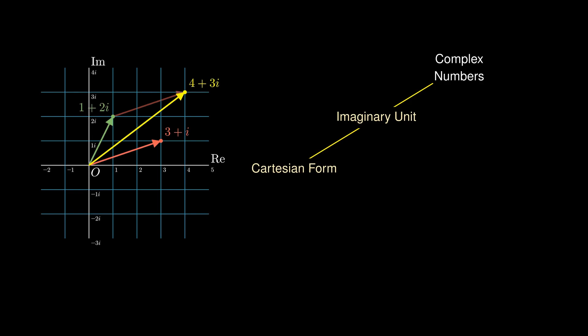If we relabel 3 + i and 1 + 2i as z and w respectively, then adding z and w gives us z + w, and geometrically it is akin to vector addition.